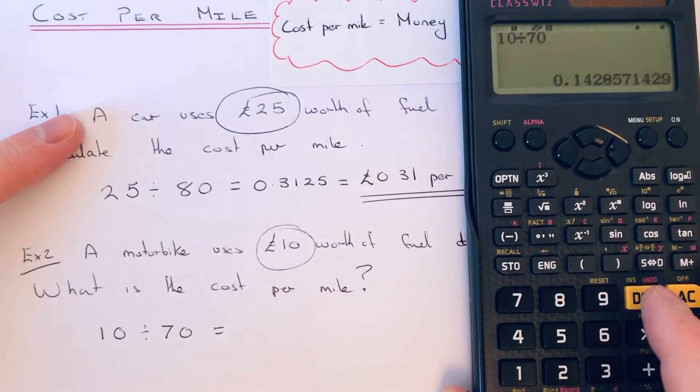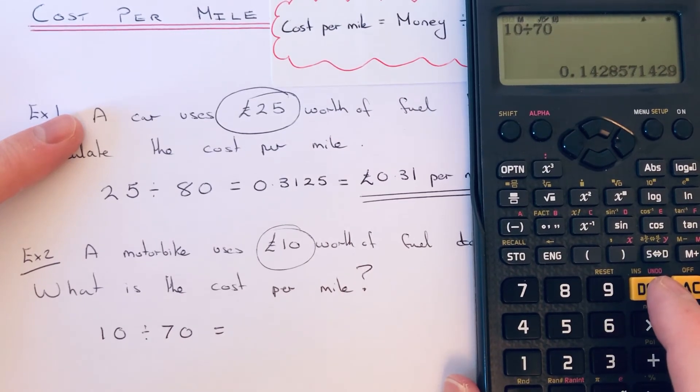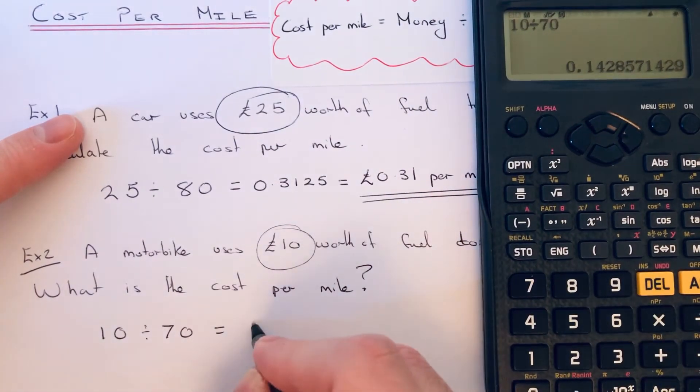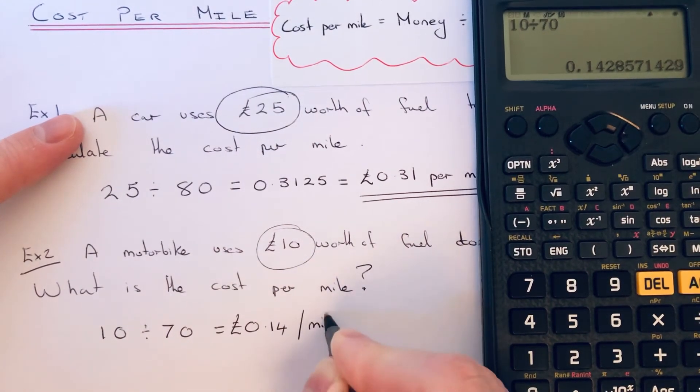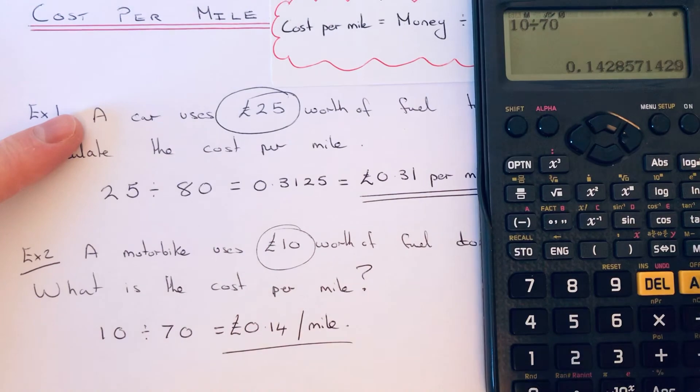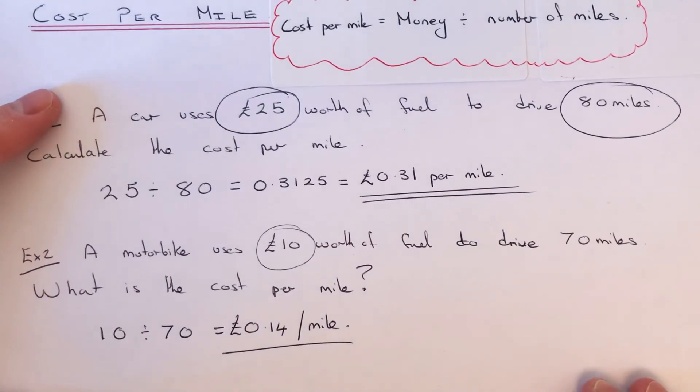Again we need to round that off to two decimal places. So it would be £0.14. This journey here is costing £0.14 for every mile.